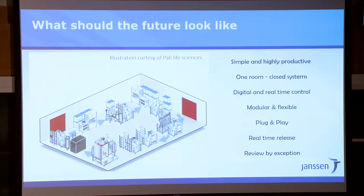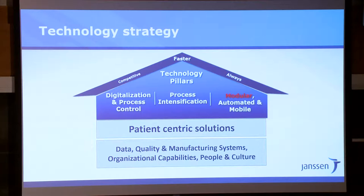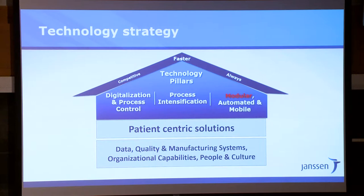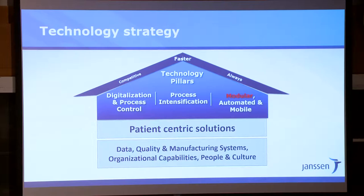This is our goal, and we know it's reachable. We have basically three pillars. The first is digitization and process control: multivariate analytics, real-time models, offline models, electronic recipes, electronic bills of materials. We can make a product file that contains all the information we need to run, understand, control, and assure the quality — all in one place.